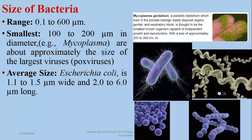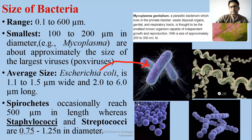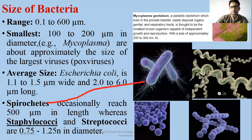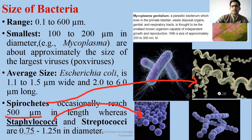A parasitic bacterium which lives in the primate bladder, genitals, and respiratory tract is thought to be the smallest known organism capable of independent growth and reproduction. Spirochete bacteria can reach up to 500 micrometers in length. Staphylococci and streptococci have a size range of 0.75 to 1.5 micrometers in diameter.